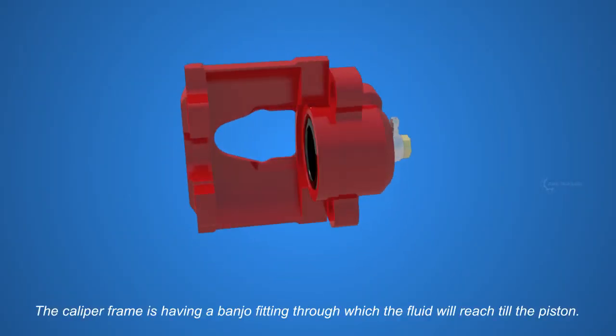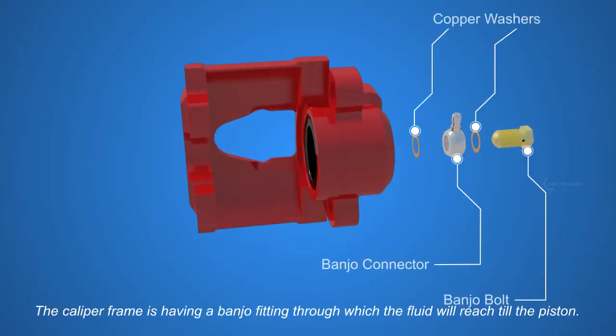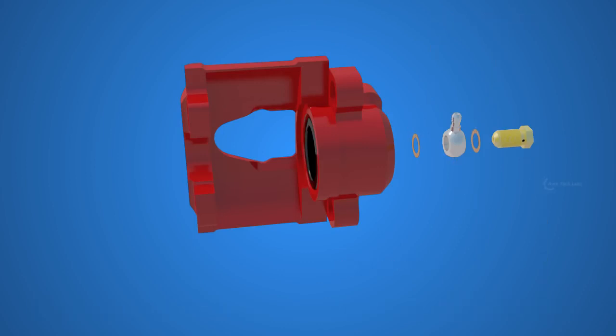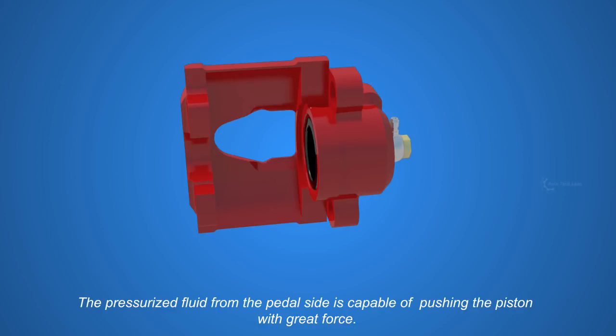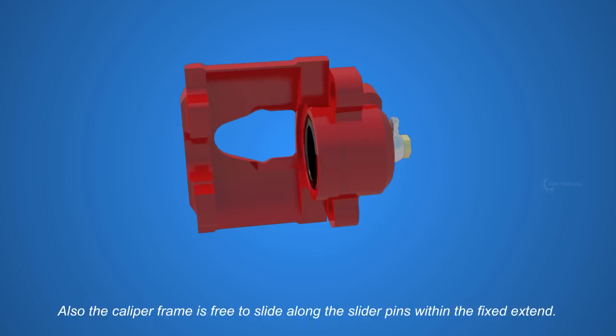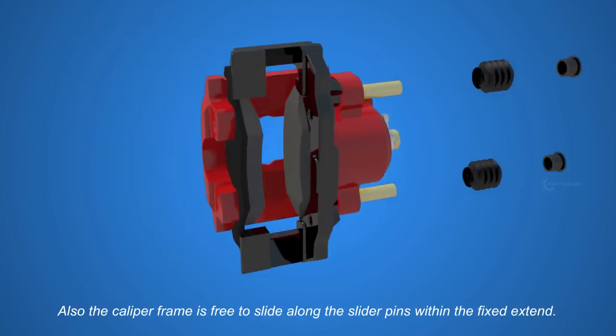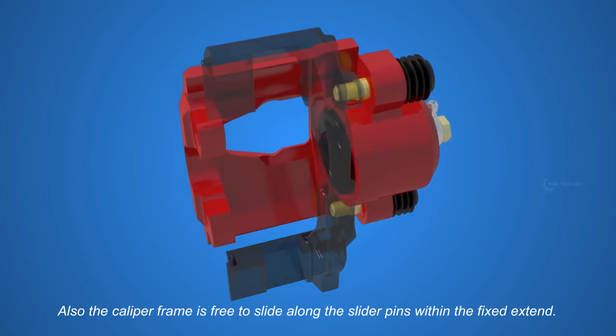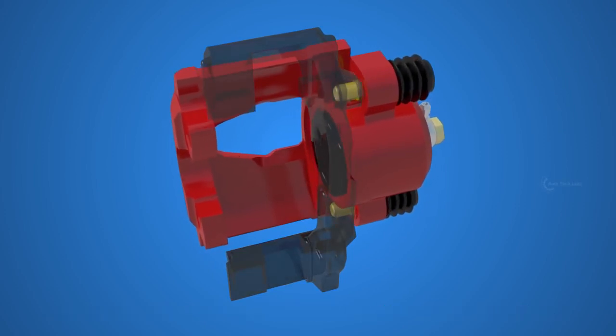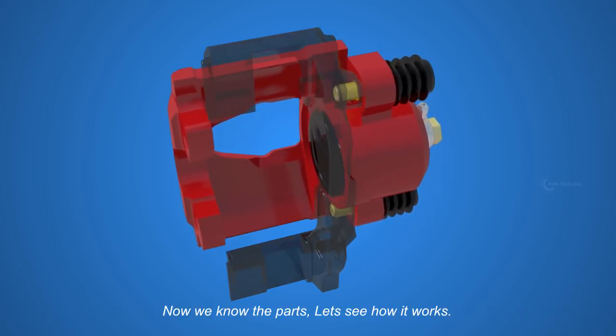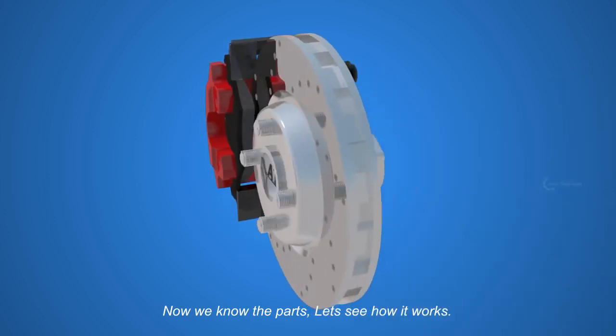The caliper frame is having a banjo fitting through which the fluid will reach till the piston. The pressurized fluid from the pedal side is capable of pushing the piston with great force. Also, the caliper frame is free to slide along the slider pins within the fixed extent. Now we know the parts, let's see how it works.